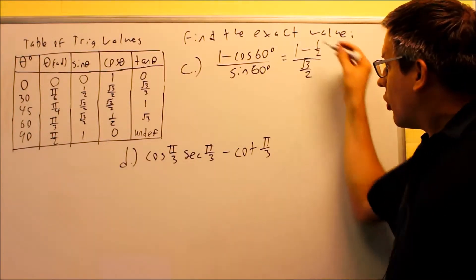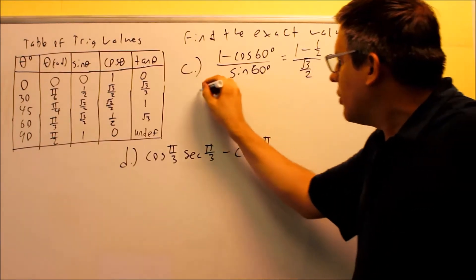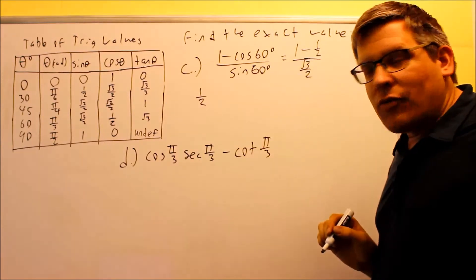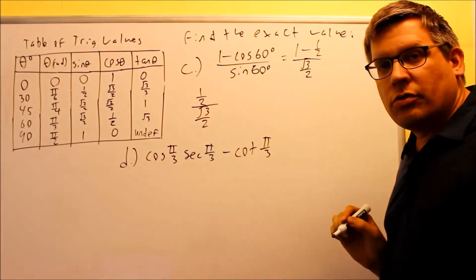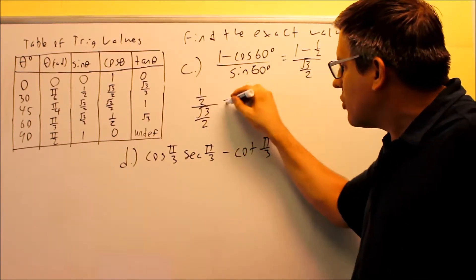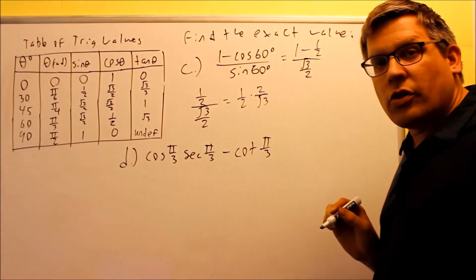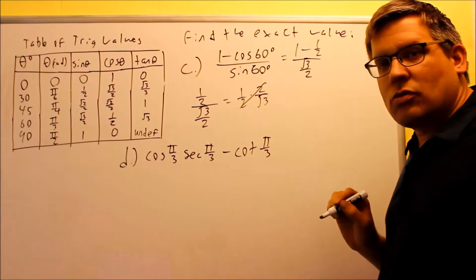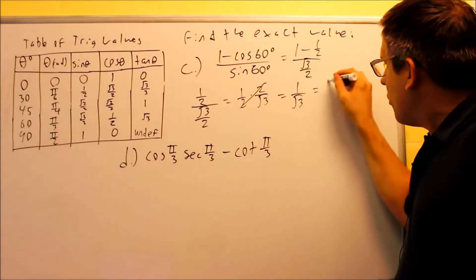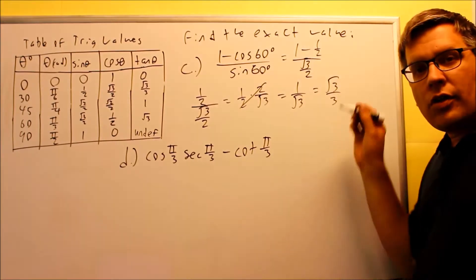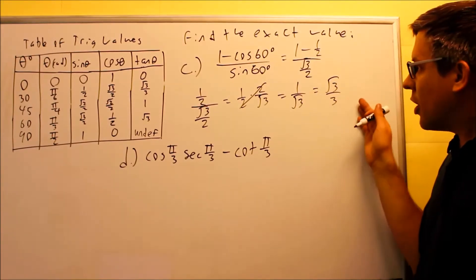We can't leave the answer like that — we need to simplify it. On the top, 1 minus 1/2 gives us 1/2, and that's being divided by square root of 3 over 2 on the bottom. To divide these fractions, you take the top fraction and multiply by the reciprocal of the bottom one — so you have 1/2 times 2 over square root of 3. The 2's cancel, giving 1 over square root of 3. We want to rationalize that answer, multiplying top and bottom by square root of 3 over square root of 3, giving square root of 3 over 3. That's the exact value for part C.